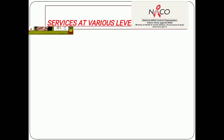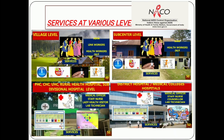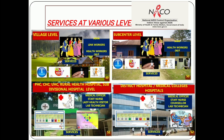The National AIDS Control Organization (NACO) includes services at various levels. At the village level, ASHA workers, link workers, and health workers provide services and distribute safe contraceptive devices and give education. At the sub-center level, ANM workers and health workers operate. At the primary health center, community health center, urban health center, rural hospital, and subdivisional hospital, medical officers, staff nurses, lady health visitors, and lab technicians provide services. At district hospitals or medical college hospitals, medical officers, staff nurses, counselors, and lab technicians handle treatment and prevention.